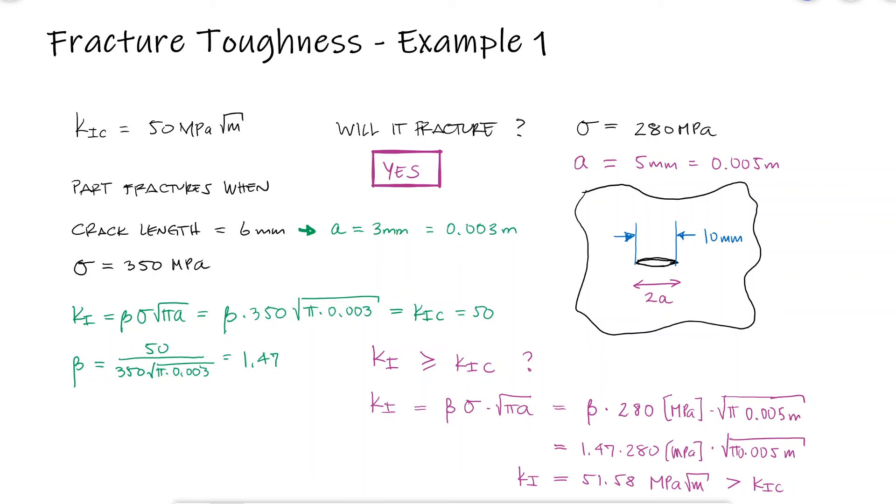Notice that in this case, we don't know anything about the type of loading or specifics about the crack beyond knowing that it's an internal crack. It would be impossible to use one of those charts to find the modification factor. This is when experimental testing is conducted to find the missing properties and parameters.